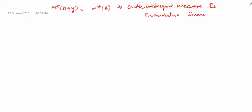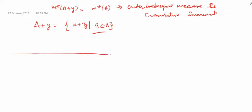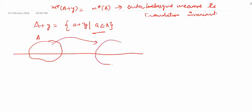First, we should know what A+y is. A+y is the set of all elements a+y where a is an element of A. If I have a set A, then A+y means I have shifted every element of A by y — so geometrically, A+y is just A translated to the right (or left) by y.